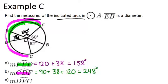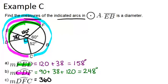Finally, the measure of arc DFC covers the whole circle except for the 90-degree angle. A quicker way instead of adding up 38 plus 120 plus 60 plus 52 is to just do 360 minus 90, the whole circle minus what we're not including, to get an answer of 270 degrees.